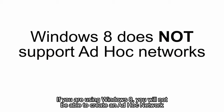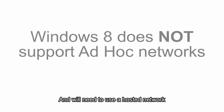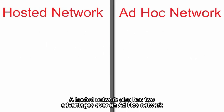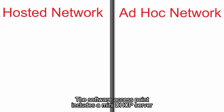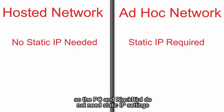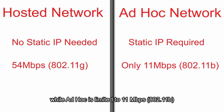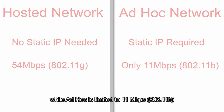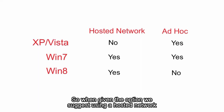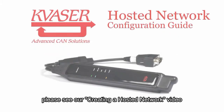If you are using Windows 8, you will not be able to create an ad-hoc network and will need to use a hosted network. A hosted network has two advantages: the software access point includes a mini DHCP server, so the PC and Blackbird do not need static IP settings, and it also allows speeds up to 54 megabits per second in 802.11g, while ad-hoc is limited to 11 megabits per second in 802.11b. So when given the option, we suggest using a hosted network. For a complete tutorial, please see our Creating a Hosted Network video.